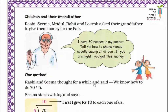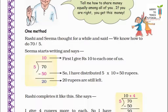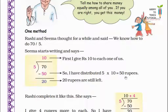Rashi and Sima thought for a while and said, we know how to do 70 divided by 5. Sima starts writing. Sima ne likhna shuru kiya aur bataya: 5 tens are 50. That means first I give rupees 10 to each one of us — main pehle sabko 10-10 rupees dungi. So I have distributed 5 into 10 equals 50 rupees. Then 70 minus 50 gives us 20 rupees left to distribute.